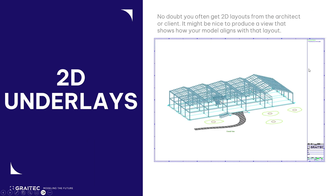The first one is 2D underlays. No doubt on every project you get some kind of 2D layout drawings from the architect or the client. These will show your grids, your building, maybe some surrounding areas and so on. It would be nice at the end of the project to give them a GA drawing of your finished model but with their layout also superimposed so they can see how the two match up. This is how you do it.